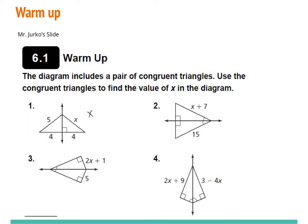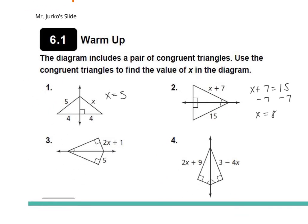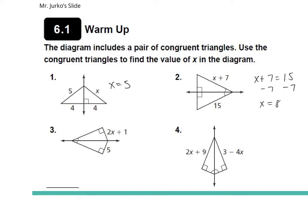For number one you should have had x equals five. For number two, x plus seven is going to be equal to 15, so x equals eight — you subtract seven from both sides. For number three, the equation is two x plus one equals five. Subtract one from both sides, get two x equals four, divide by two, x equals two.